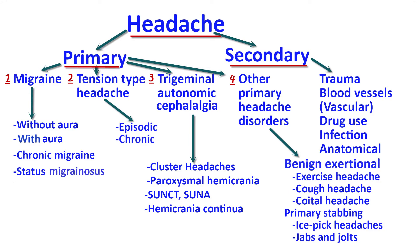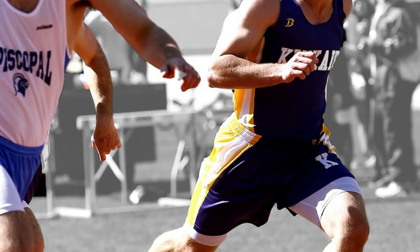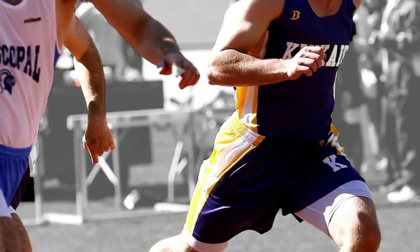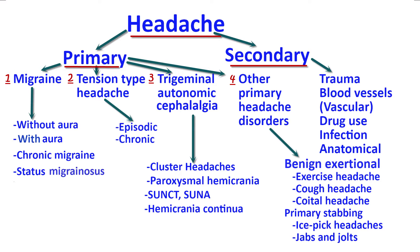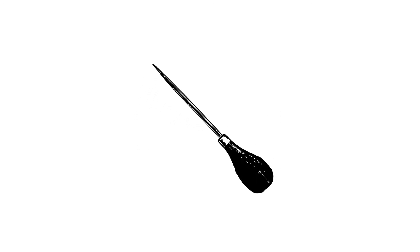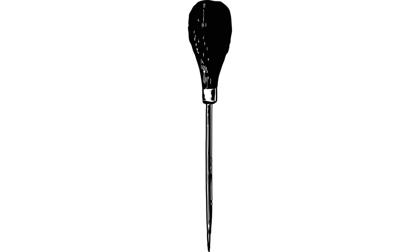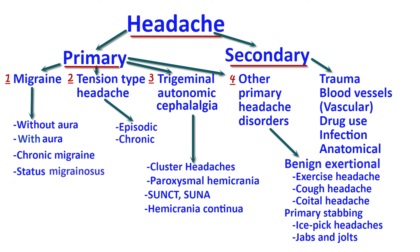Other primary headache disorders is the fourth group. This includes benign exertional headaches such as exercise-induced headache, cough-induced headache, and coital headache — the latter usually occurring during the buildup to or onset of orgasm, presenting as bilateral headaches lasting hours. Primary stabbing headaches, also referred to as ice pick headaches or jab and jolt syndrome, are stabbing headaches occurring on either side of the head multiple times per day.